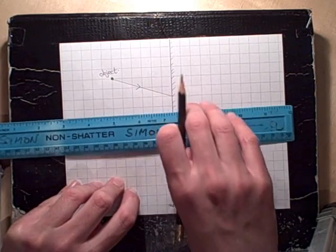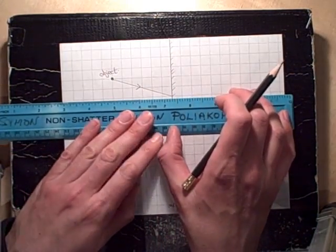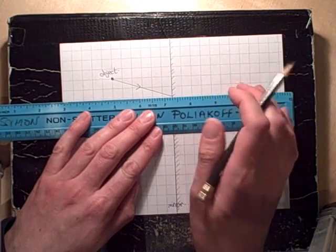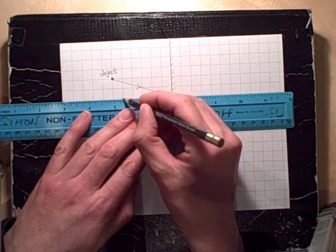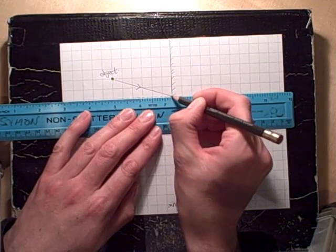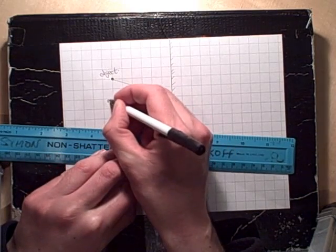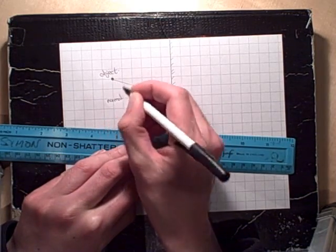Now, where the line, the ray of light hits the mirror, we now need to add a dotted line at 90 degrees to the mirror, which is called the normal. So I add in a dotted line with the pencil, and then because it's a word, I write in normal in pen.